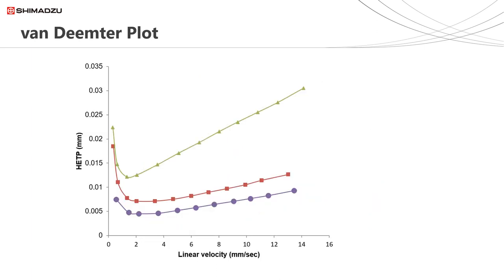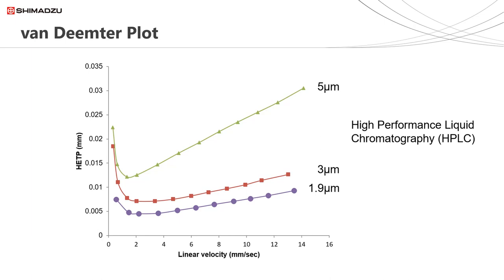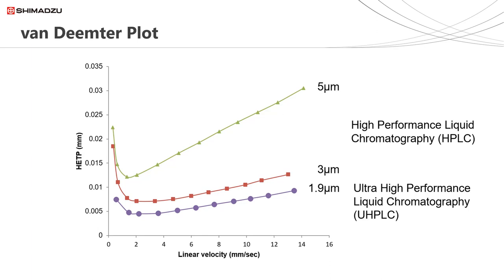This is an example of three Van Deemter plots for columns of different particle sizes. The top curve is for a column packed with five micron particles — notice how quickly plate height increases as mobile phase velocity increases. The middle curve is for a column packed with three micron particles and the bottom curve is for a column packed with 1.9 micron particles. Notice how increasing the mobile phase velocity beyond the optimal for minimum plate height does not have the dramatic detrimental effect on plate height as seen for five micron particles. The efficiencies seen for 3 and 5 micron particles are typically referred to as HPLC, and those seen for 1.9 micron particles or smaller as UHPLC or ultra high performance liquid chromatography.